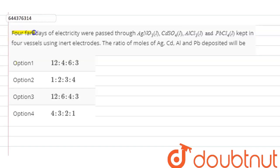The question is: 4 Faraday's of electricity were passed through AgNO3, CdSO4, AlCl3, and PbCl4 kept in 4 vessels using inert electrodes. The ratio of the moles of Ag, Cadmium, Aluminium and Lead deposited will be: